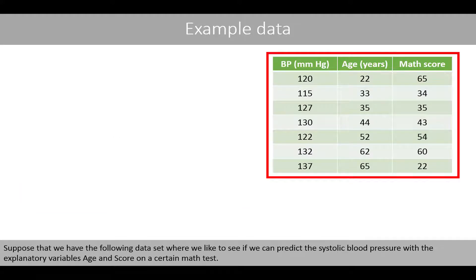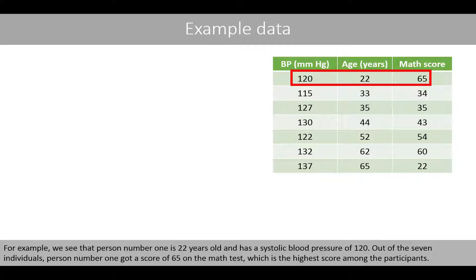Suppose that we have the following dataset where we'd like to see if we can predict the systolic blood pressure with the explanatory variables age and score on a certain math test. For example, person number one is 22 years old and has a systolic blood pressure of 120. Out of the seven individuals, person number one got a score of 65 on the math test, which is the highest score among the participants.